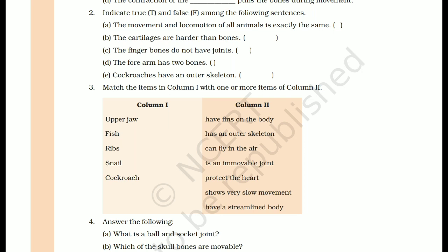Snail: as we observed in a chapter activity, snail shows very slow movement. Cockroach: the remaining two options apply — cockroach has an outer skeleton and can fly in the air.